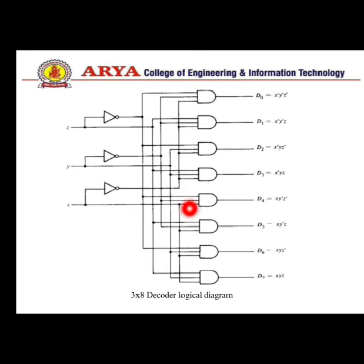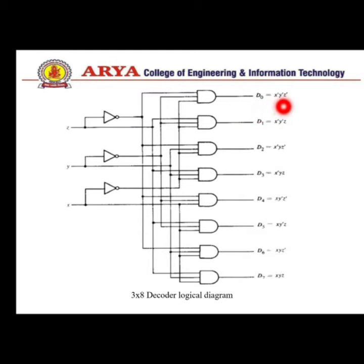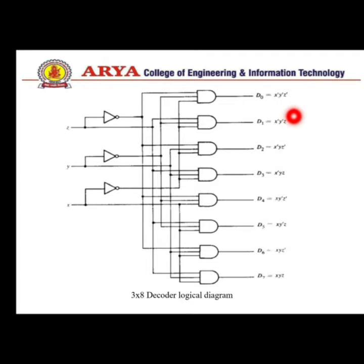In the circuit diagram, the output lines represent the minterm of the binary number present at the input. D0 equals X-bar·Y-bar·Z-bar, where X is connected to a NOT gate and then to a three-input AND gate. Similarly, D7 equals X·Y·Z. This decoder is used for binary-to-octal conversion.